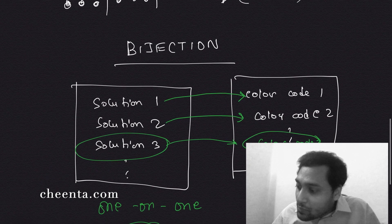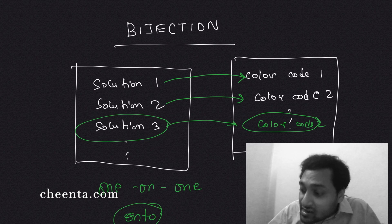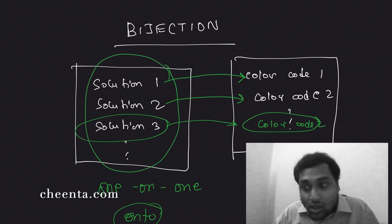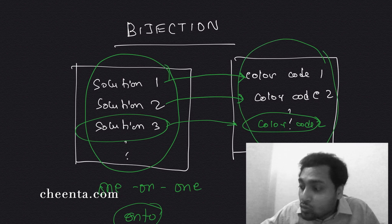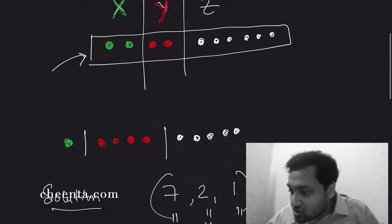All right. So what we will do is, instead of counting the solutions, we will count the color codes, the number of color codes. So how do we do that? Okay, we come back to this picture again.